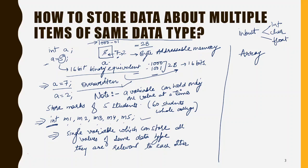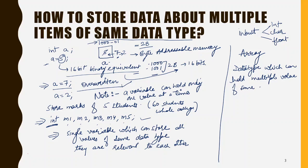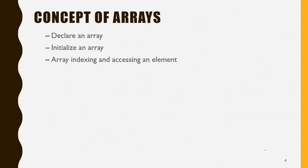We need not have multiple variables in the case of multiple values of the same data type. Instead, we should have a concept where all these multiple items of the same data type can be stored in a single variable. And this is where the concept of array comes in. The concept of array is a data type which can hold multiple values of the same data type. So I can further explore the concept of array — we have to see how to declare this array, how an array looks, how it is declared, and other things.